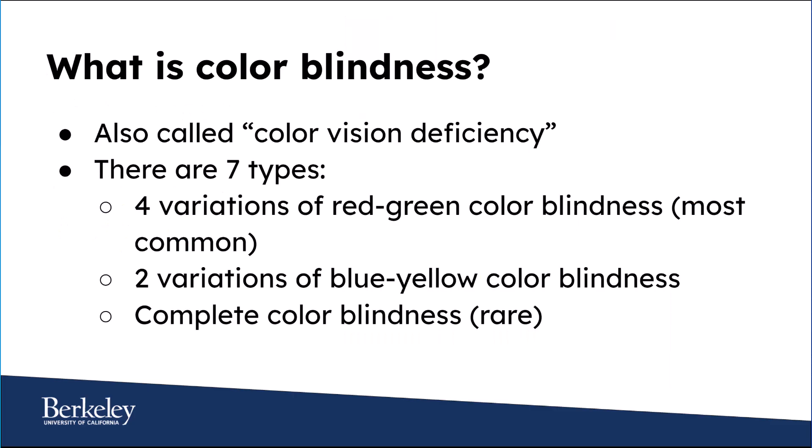What is color blindness? It may also be called color vision deficiency and there are seven types. There are four variations of red-green color blindness, which is the most common. There are two variations of blue-yellow color blindness. And then there's complete color blindness, in which a person sees everything in grayscale. Complete color blindness is rare.